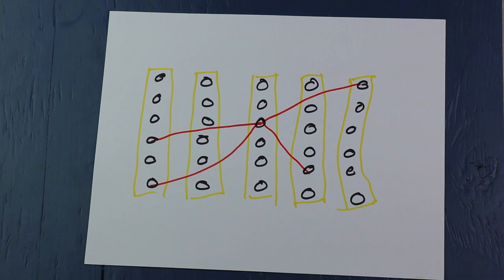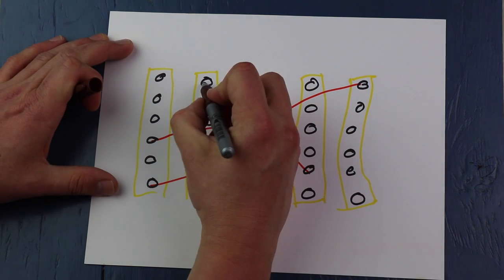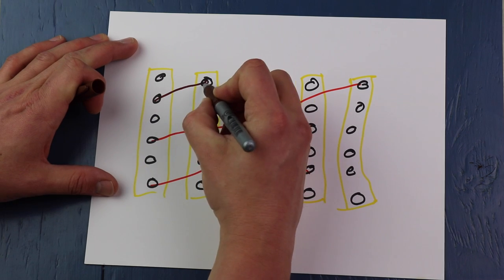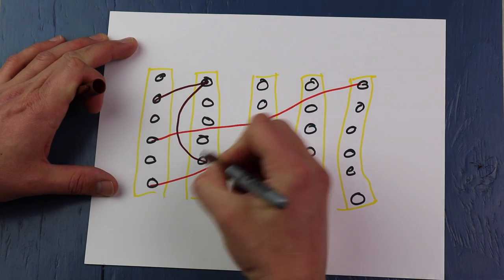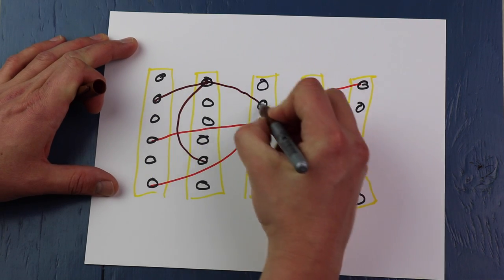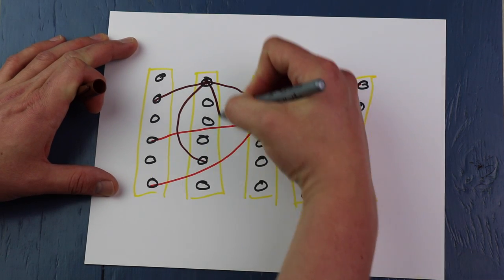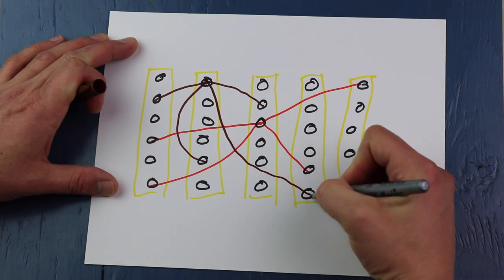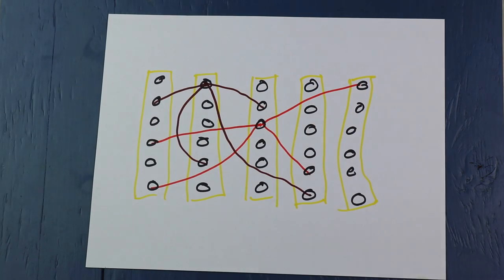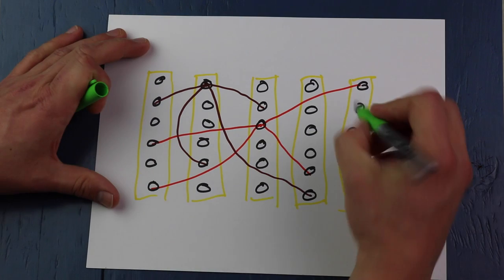So it has four synapses. Every cell in the structure could potentially connect to any other cell in the structure. Here's another cell with a segment connecting to four other cells.